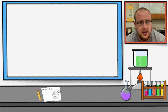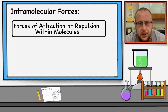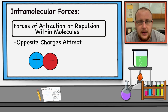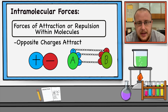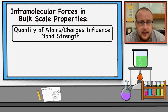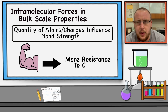Looking back at our last lecture, we talked about intramolecular forces — forces of attraction or repulsion of molecules or multiple atoms attracting or repulsing each other. We talked about how opposite charges attract each other, and the quantity of those opposite charges creates strength, making them stronger or weaker. If I have one positive and one negative charge, that's going to be weaker than three positive and three negative charges. Opposites attract, like charges repel. The bulk of these molecules coming together make bonds, and the stronger those bonds are, the more they're going to resist a change in state.